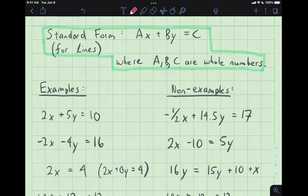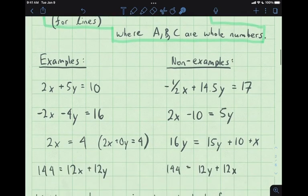In general, it looks like this, I guess I should highlight this. This stuff is all important, standard form for lines. It looks like Ax plus By equals C, where A, B, and C are all whole numbers.